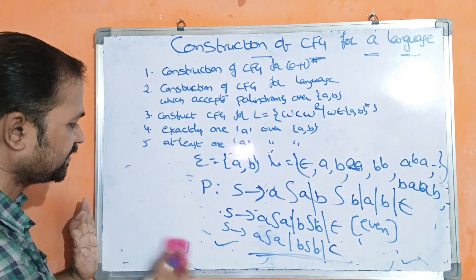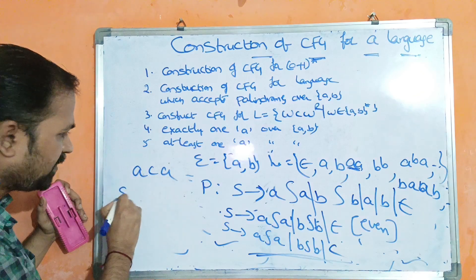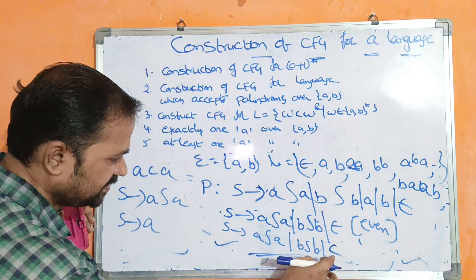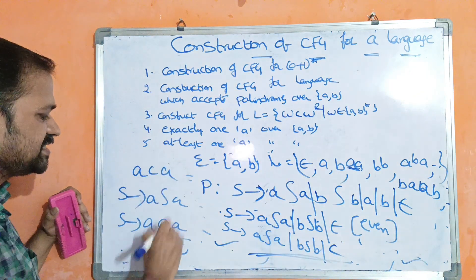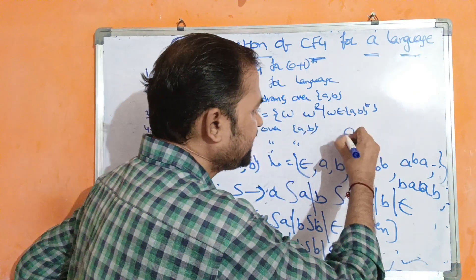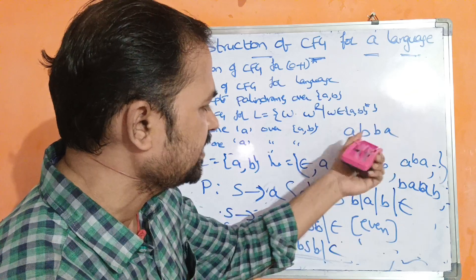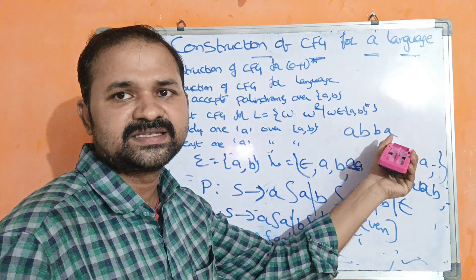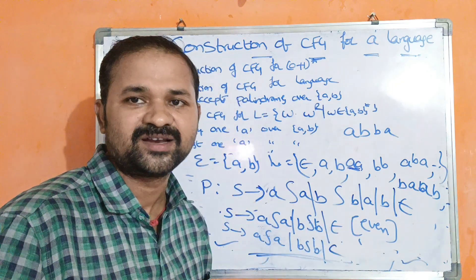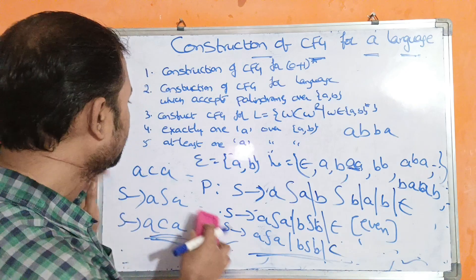For example, to derive aca: S implies aSa; then S implies c, giving a c a. This confirms the grammar works. If we remove c (i.e., ww^r), the productions S implies aSa, bSb, epsilon would generate even-length palindromes. But here c forces the middle, making all strings odd-length. The productions for this CFG are: S implies aSa | bSb | c.